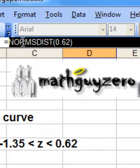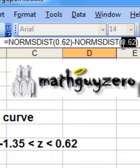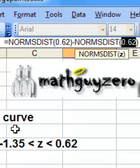You're going to cut and paste the formula, NORMSDIST formula. Click behind it, put a subtraction in there, hit Control V to paste it back in, but then change this second value to whatever the first number is here. So that's a negative 1.35.